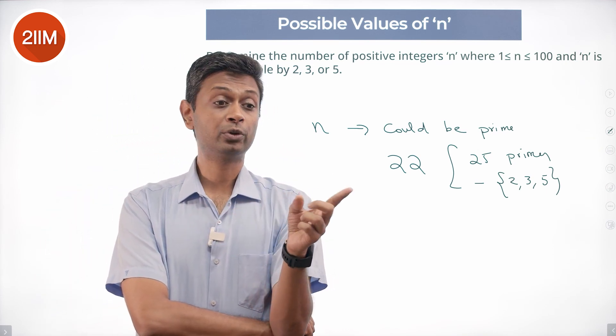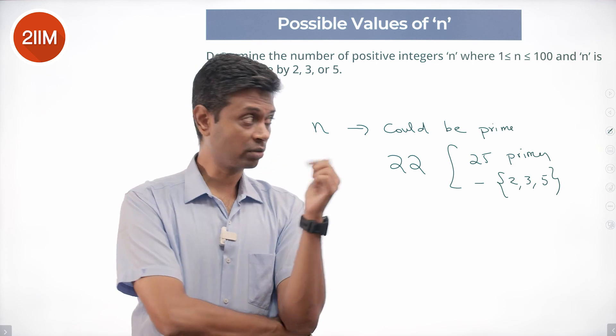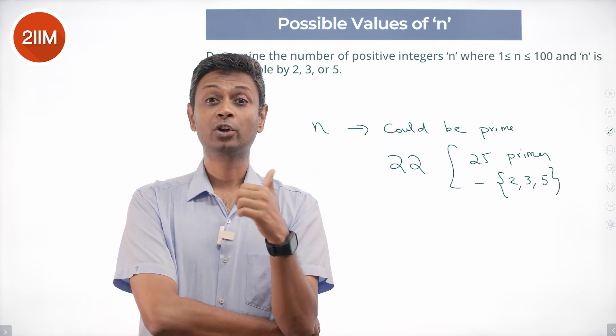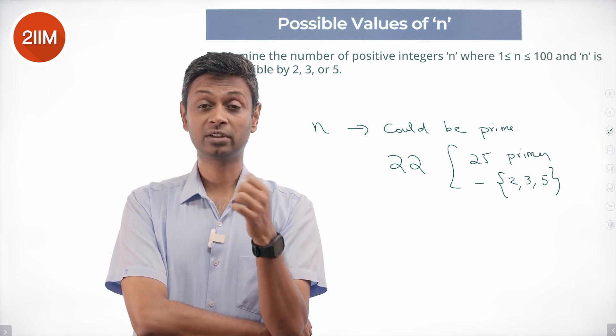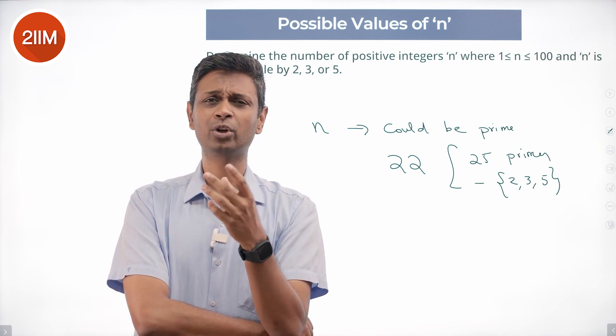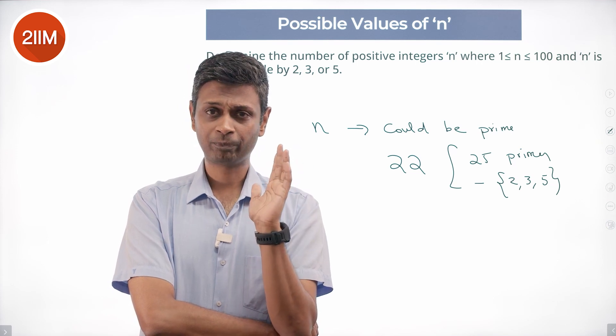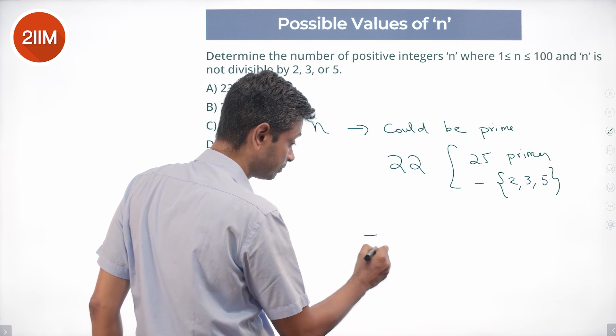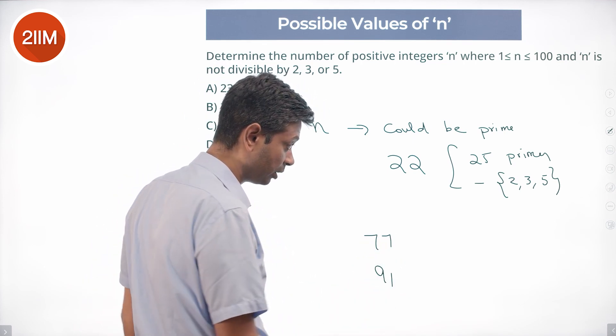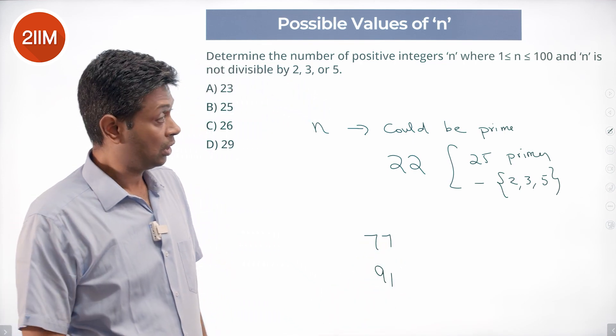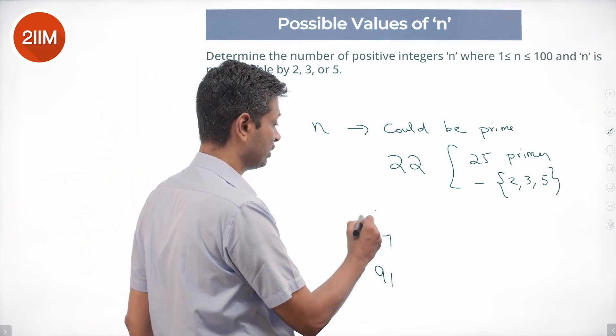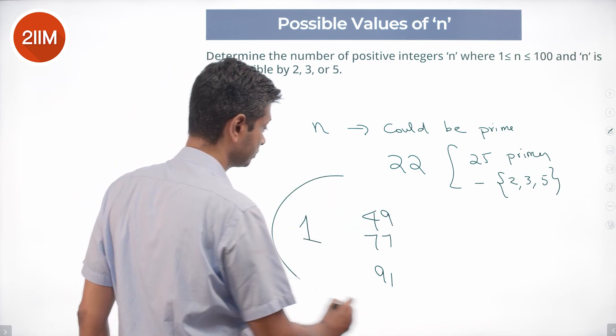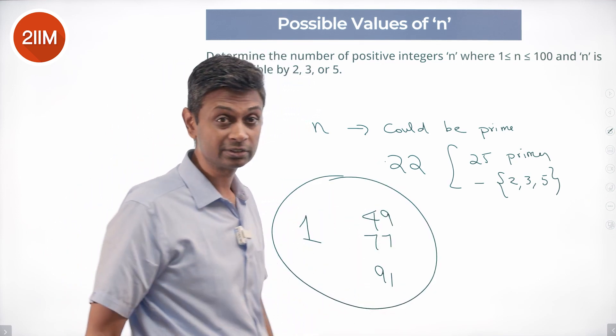That are not multiples of 2, 3, or 5. So composite numbers, because they're not prime, they've been counted. All prime numbers but not multiples of 2, 3, or 5 could be 7 times something, 11 times something, 13 times something, 17 times something. 2, 3, 5 eliminated. 7 times 11 is 77, 7 times 13 is 91. I should not forget 7 times 7, which is 49, and I should not forget 1. To these 22 prime numbers, I include 1.